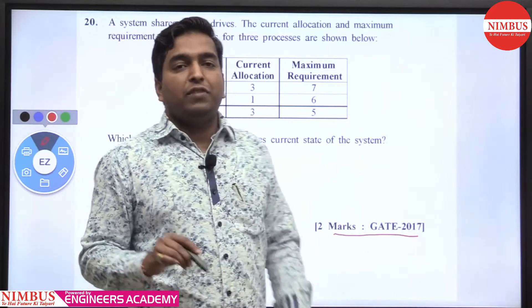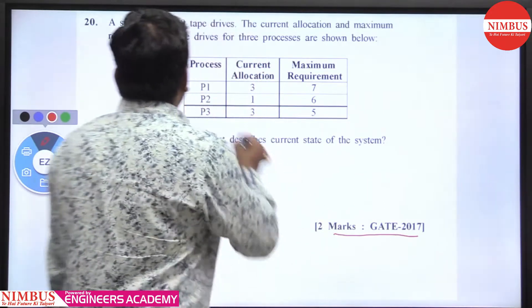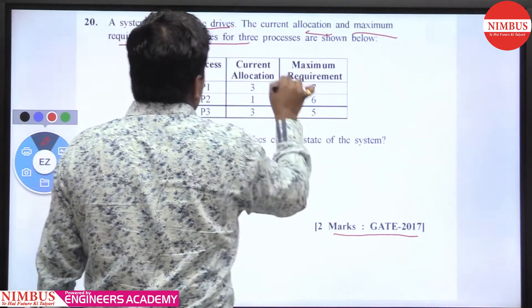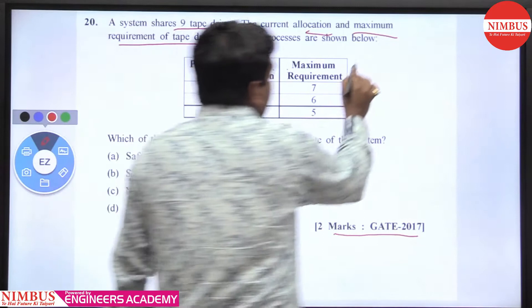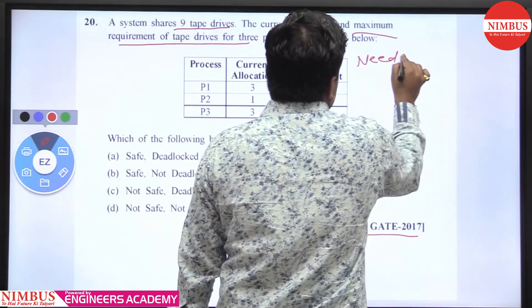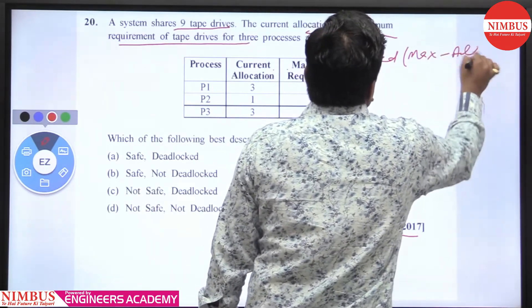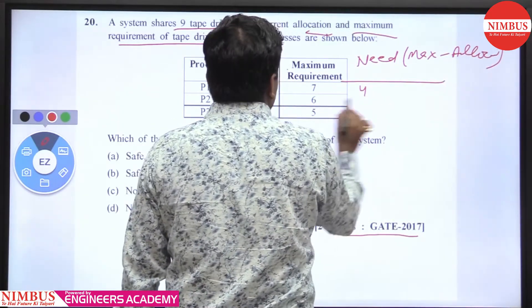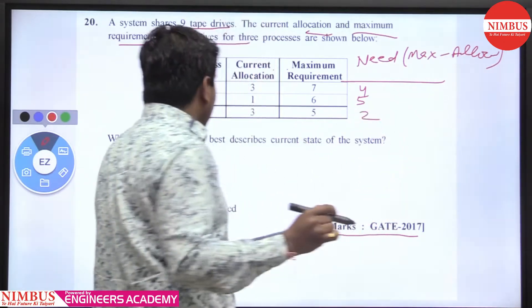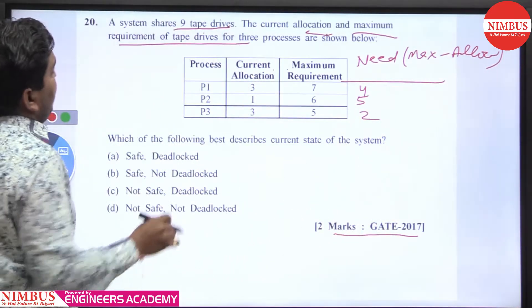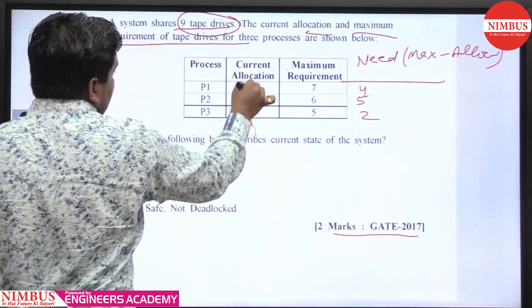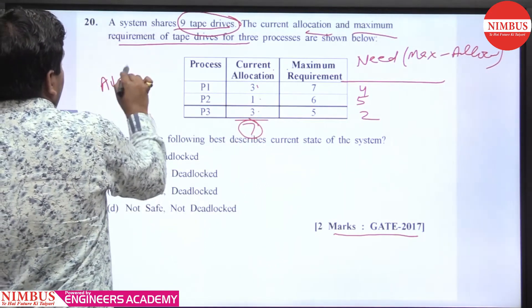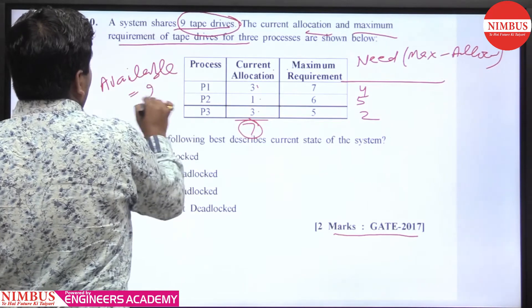This is GATE 2017, two-mark question. A system has nine tape drives. The current allocation and maximum requirement for tape drives is shown. We calculate the need matrix — maximum minus allocation: 7 minus 3 is 4, 6 minus 1 is 5, 5 minus 3 is 2. The total allocated is 3 plus 1 plus 3 equals 7, so available is 9 minus 7 equals 2.